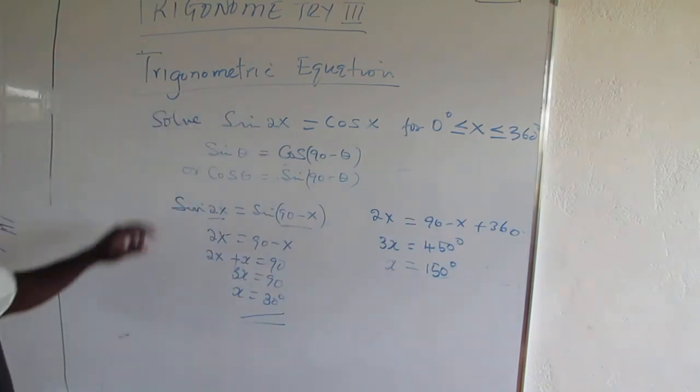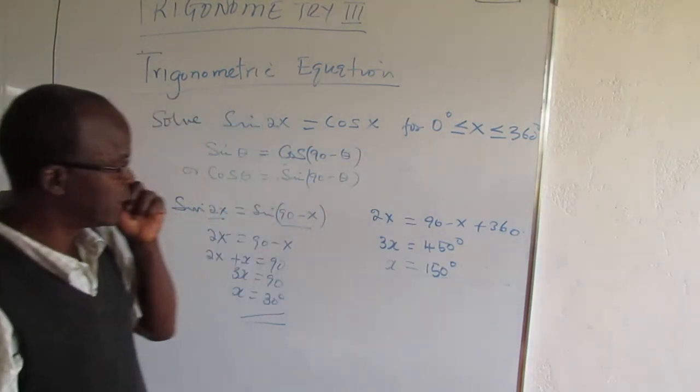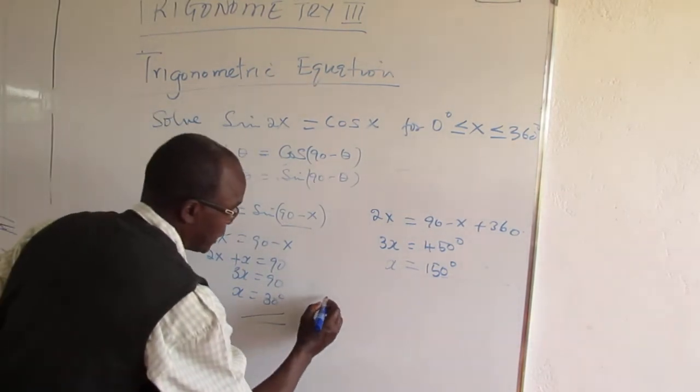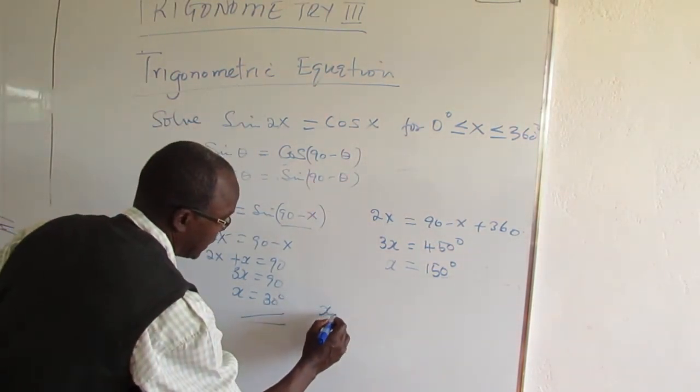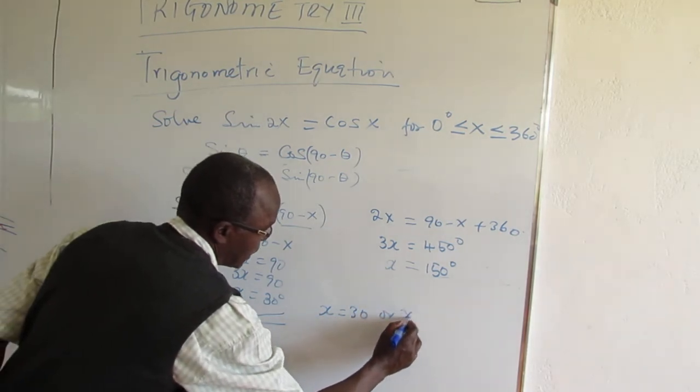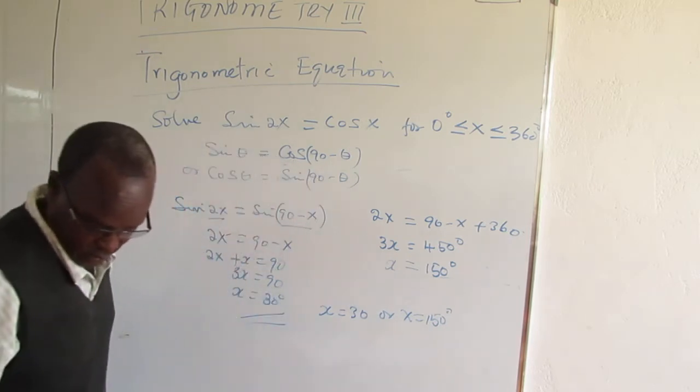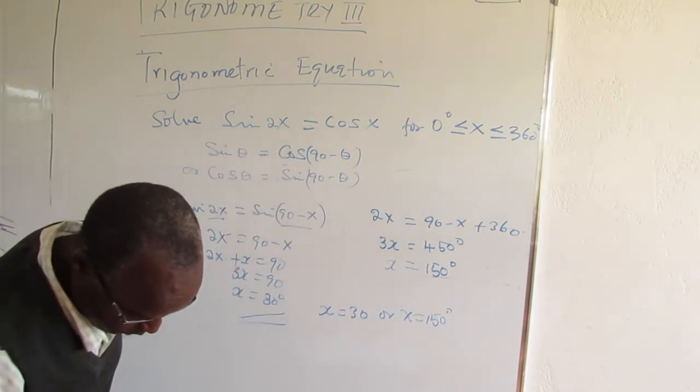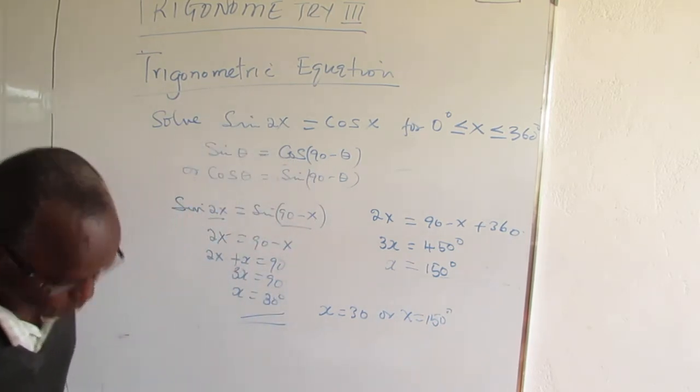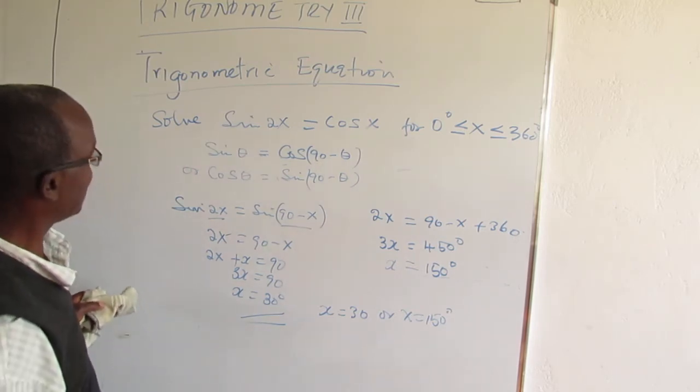So the answer we need is between 0 and 360. So those are the two answers, x is either 30 or x is 150 degrees. So that is when it is done theoretically.